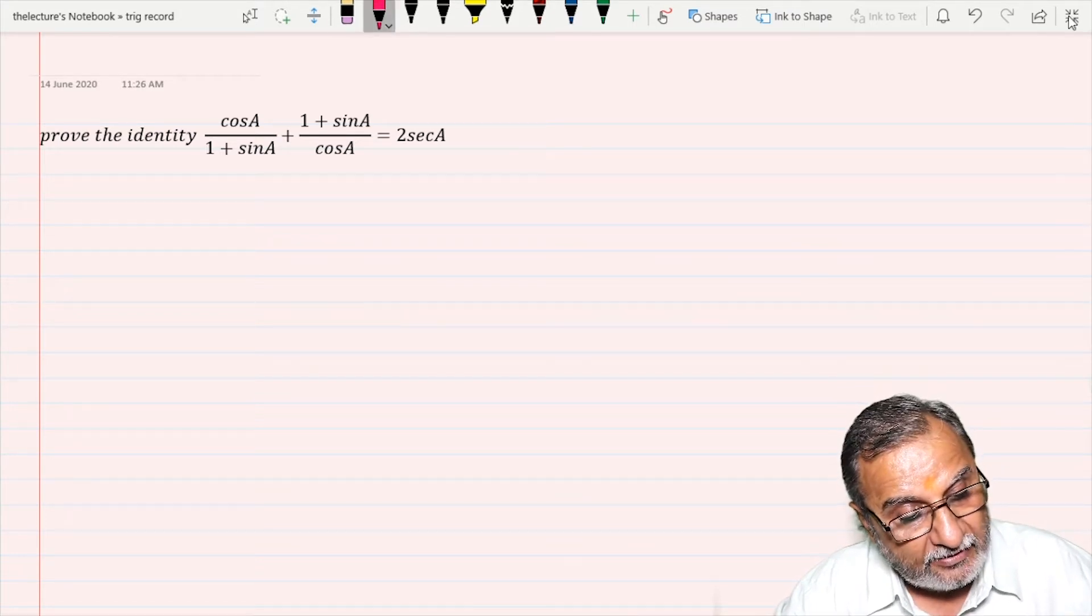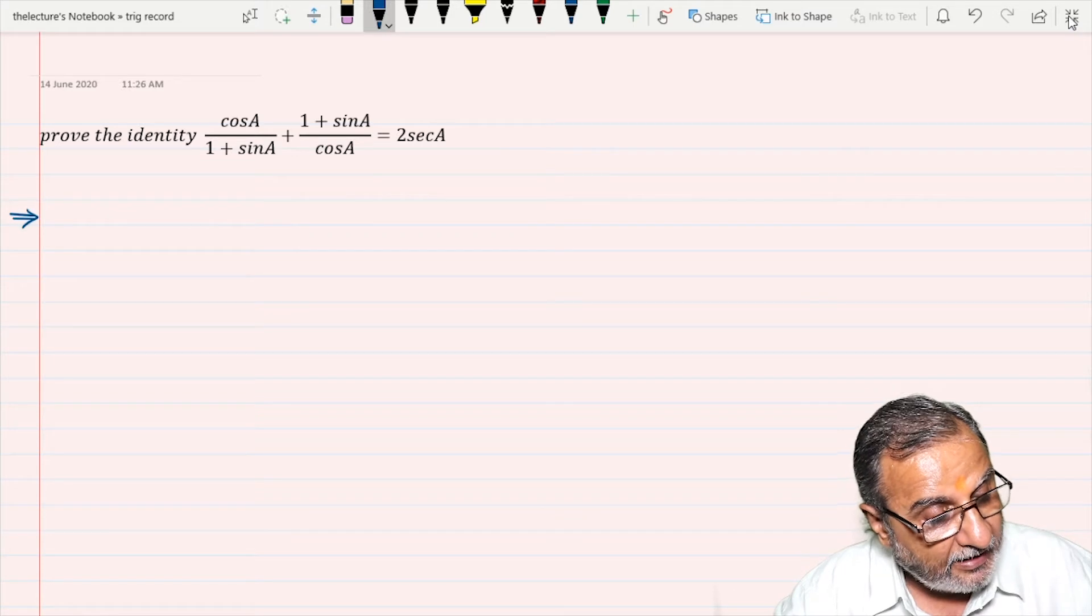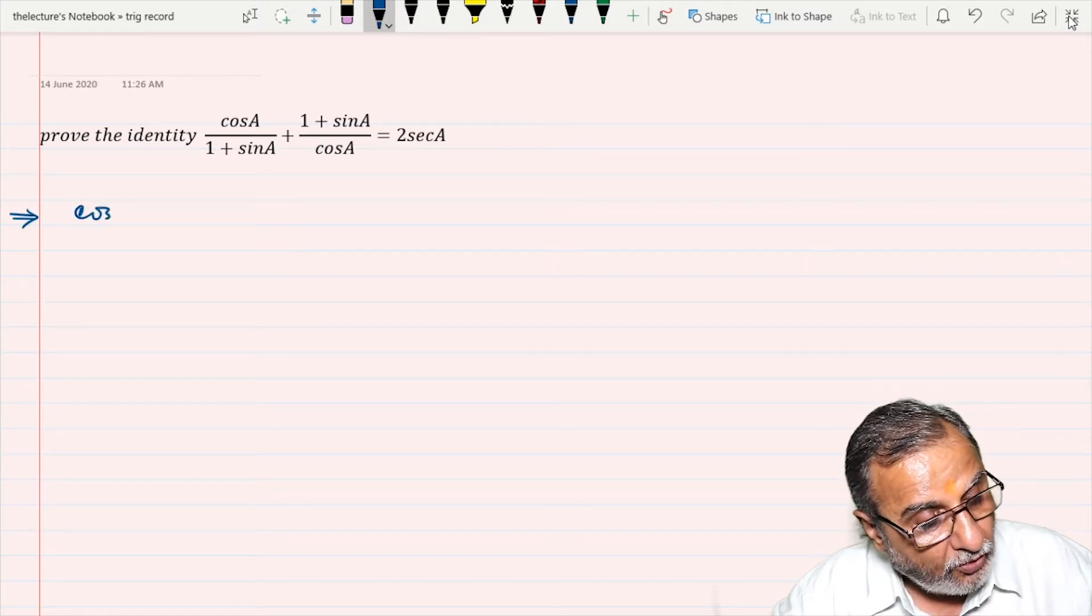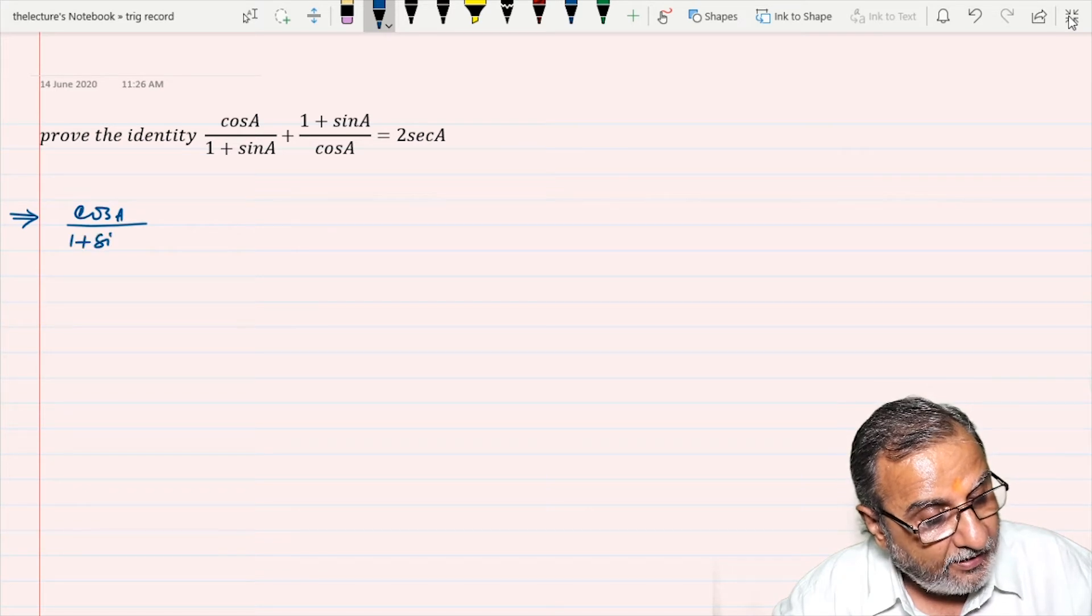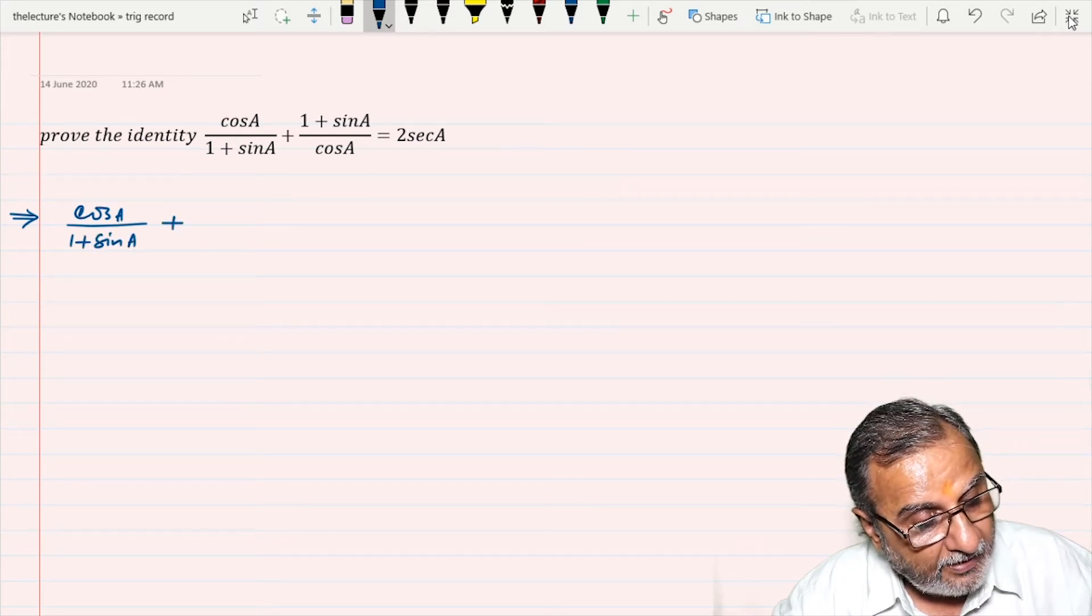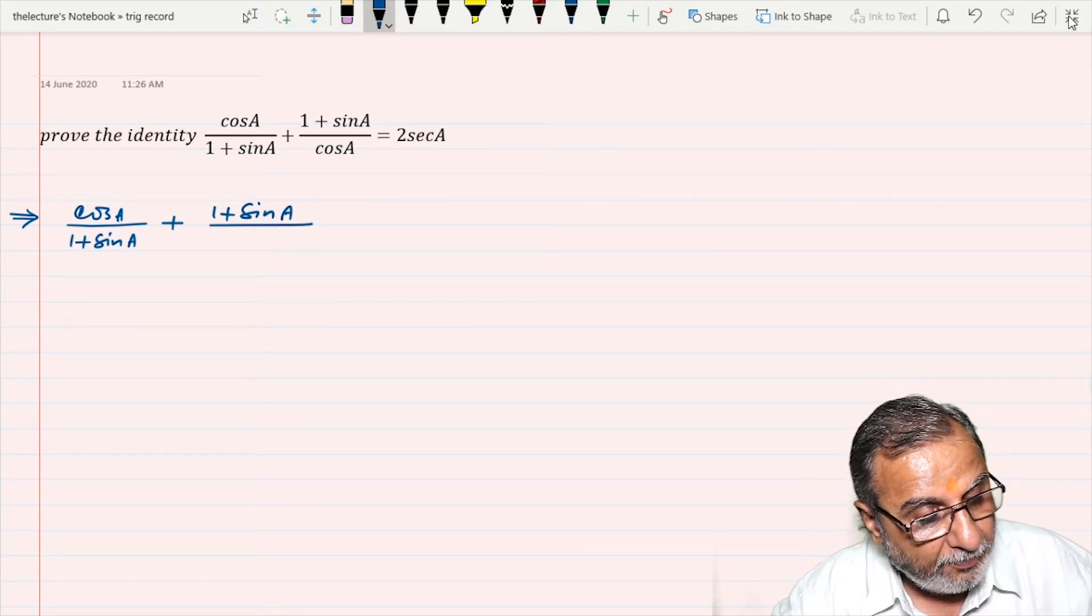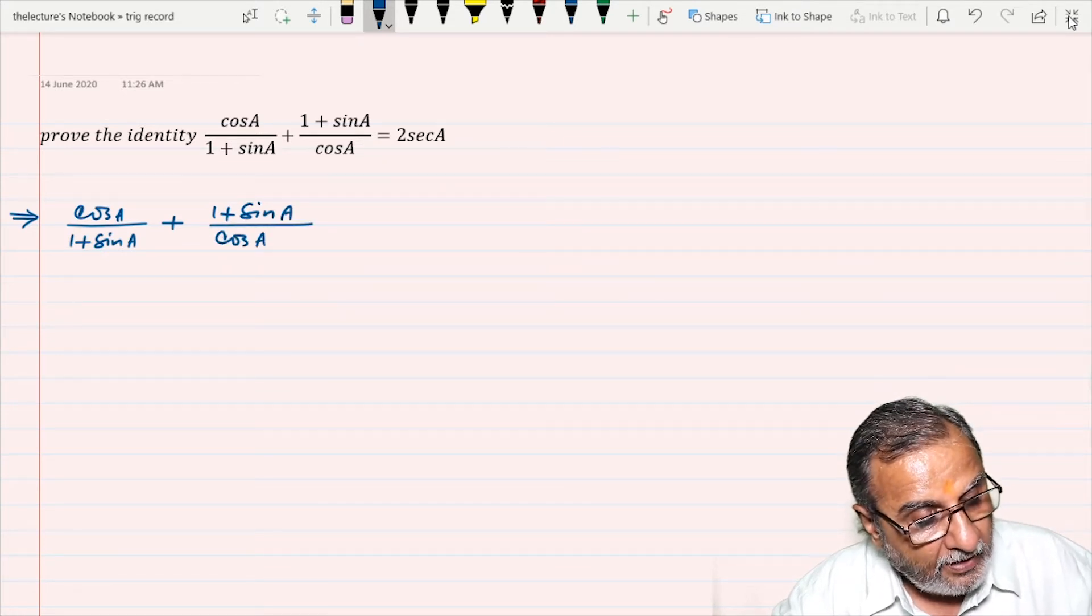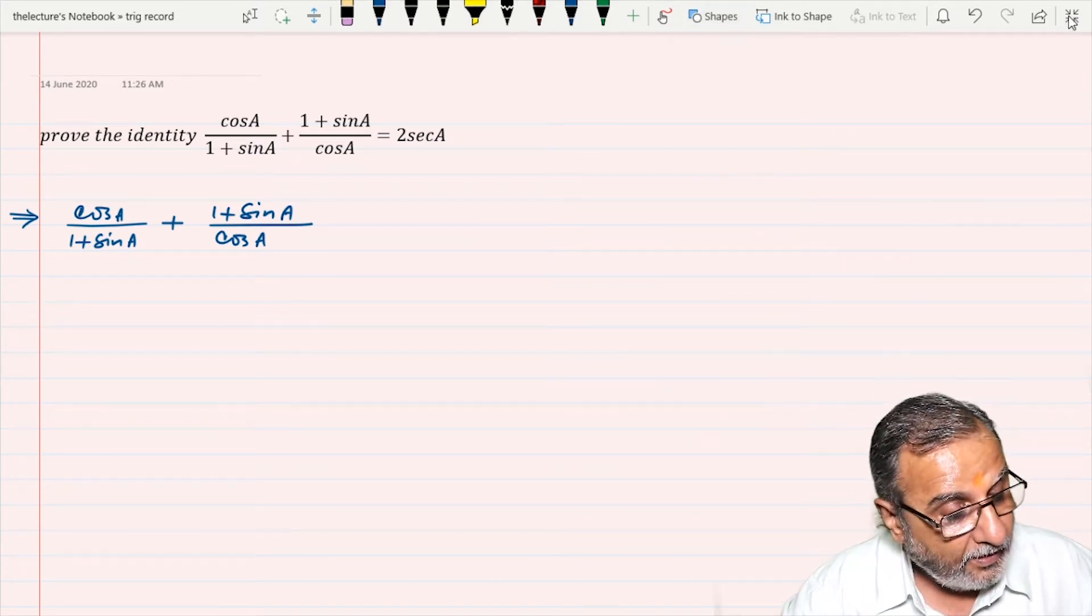So I am starting the question with the left-hand side. So cos A upon 1 plus sin A plus 1 plus sin A upon cos A, and taking LCM...